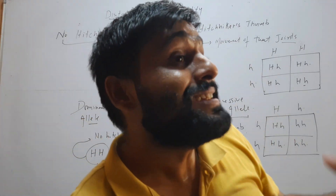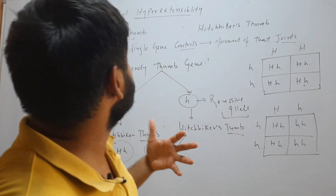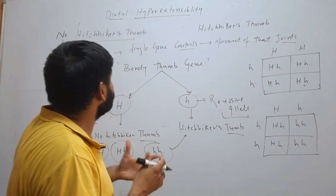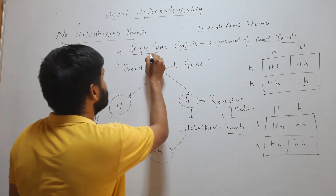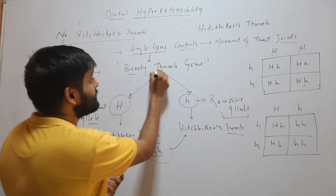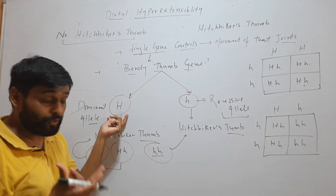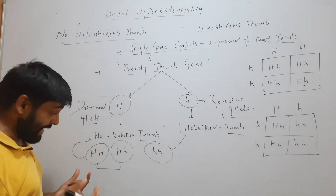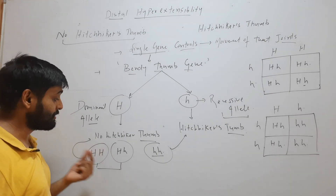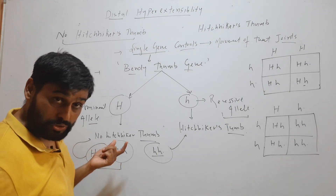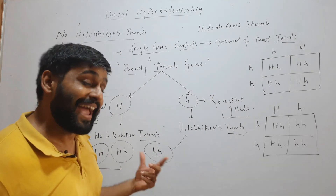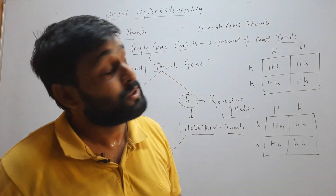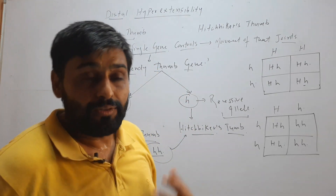So this is the genetics of hitchhiker's thumb, or thumb's distal hyperextensibility. Some people can bend this thumb and some can't. It is because of a single gene called the bendy thumb gene, which has two alleles: capital H and small h. Capital H is dominant and small h is recessive. When a person's genotype is capital H capital H or capital H small h, they will have no hitchhiker's thumb. When a person has small h small h, they will have hitchhiker's thumb.